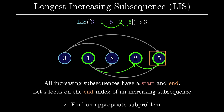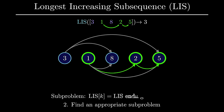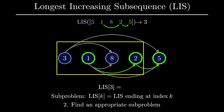Let's define a subproblem as LIS at index k, which means the longest increasing subsequence ending at index k. For example, the LIS ending at index 3 would be the sequence starting at 1, followed by 2, which has a length of 2. Remember that when referring to LIS in this problem, it is specifically with respect to the length of the sequence.